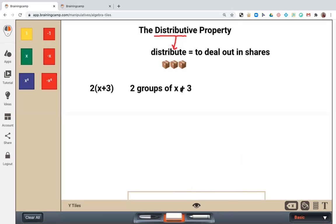So what does this look like? Well, one group of x plus 3 would look like this. However, this 2 out here, he's like the distributor.